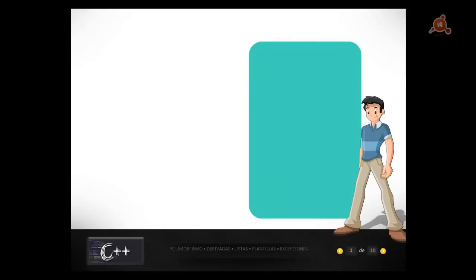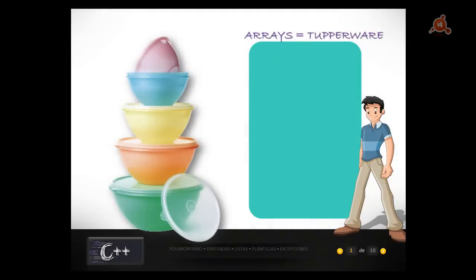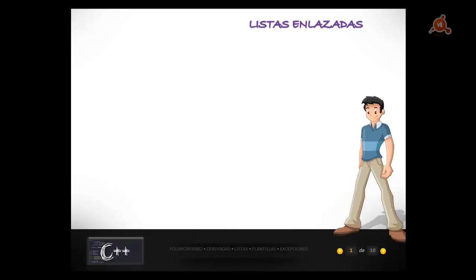Desde el punto de vista de la funcionalidad, las listas enlazadas hacen algo similar a lo que hacen los arrays, pero los arrays tienen una serie de limitaciones. A veces se les compara con Tupperwares porque son grandes contenedores pero cada uno tiene siempre un tamaño fijado que no se puede modificar. Si tenemos un contenedor demasiado grande desaprovechamos espacio, y si es demasiado pequeño no tenemos espacio suficiente. Para solucionar ese problema, un modo de solventarlo es con el uso de las listas enlazadas.